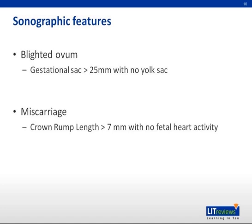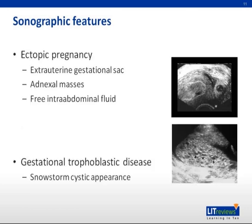A blighted ovum is diagnosed when the gestational sac is more than 25 millimeters but there is no yolk sac. A miscarriage is diagnosed when the crown-rump length is more than 7 millimeters without fetal cardiac activity. If a miscarriage is diagnosed, identification of remnant products of conception and thickness of endometrium are necessary. If an ectopic pregnancy is suspected, efforts should be made to look for adnexal masses or free fluid within the pouch of Douglas. If gestational trophoblastic disease is suspected, the classical image of a cystic snowstorm appearance should be evident.